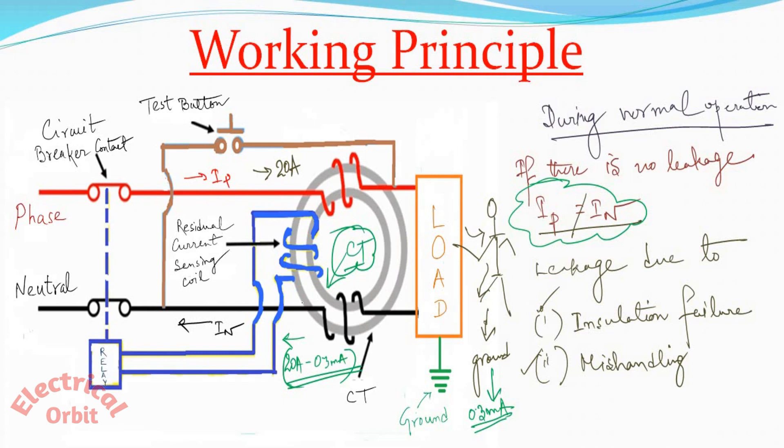Whenever this CT is experiencing different types of current, then this signal is going to the relay. The relay senses this current difference and it trips this circuit breaker. That means this circuit gets open and this human being is protected from shock. Clear.